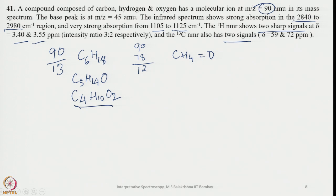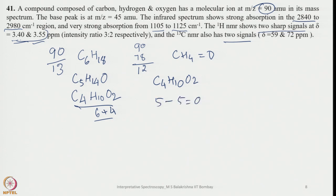With C4H10O2, the two chemical shifts at 3.40 and 3.55 in a 3:2 ratio suggest dividing the 10 hydrogens into 6 and 4, meaning 2 types of hydrogen atoms. The hydrogen deficiency index is 5−5 = 0, so no unsaturation is present.